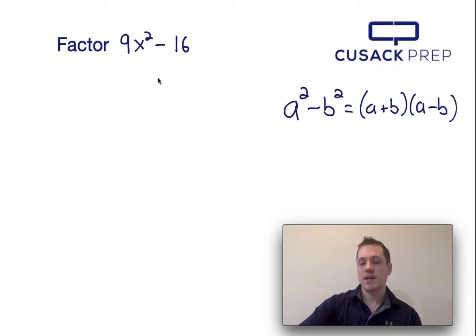So if a squared is 9x squared, a must be 3x because that would be the square root of 9x squared. And if b squared is in the same position as 16, b must be 4 because it would just be the square root of 16.